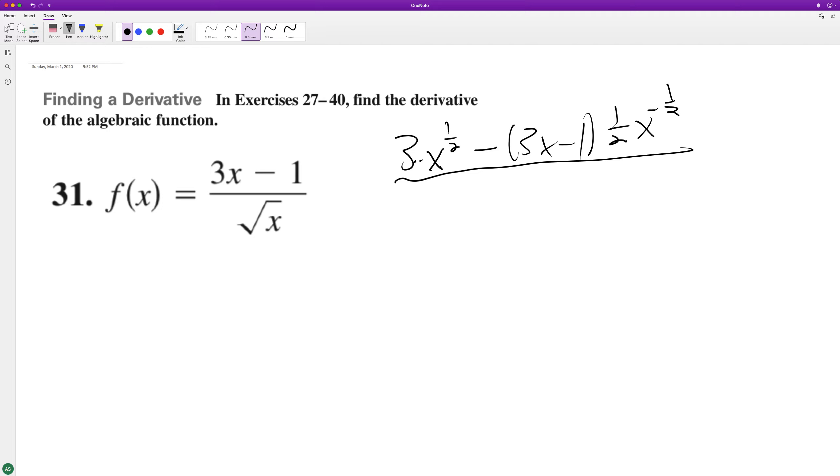And then the denominator squared, which is just x. So we end up with three x raised to one half minus